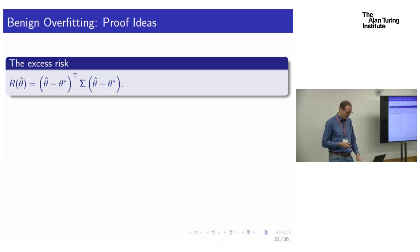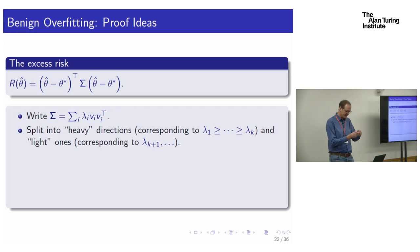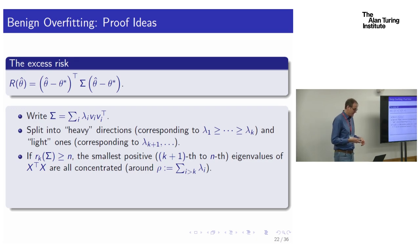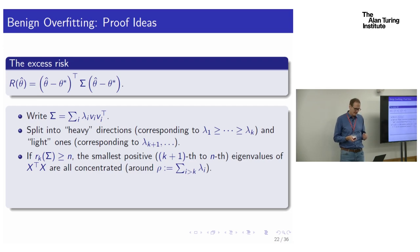The noise part of the excess risk involves the trace of (X^T X)^+ sigma. When we write sigma in its spectral decomposition, we split into heavy directions (highest variance) and light directions. Once the effective rank R_K exceeds N, the smallest non-zero eigenvalues of X^T X are all concentrated — they all look like the trace of what's left. This is straightforward to show from concentration of quadratic forms results: little r_K being bigger than N means the trace term dominates.